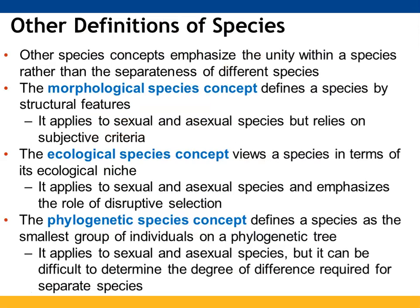There are other ways to organize or describe organisms. Morphological species concept looks at structural features and can apply to both sexual and asexual species, though the criteria are subjective. The ecological species concept looks at ecological niche, applies to both sexual and asexual species, and focuses more on the role of disruptive selection and natural selection. The phylogenetic species concept defines species as the smallest group of individuals found on a phylogenetic tree — it applies to both sexual and asexual reproducers, but makes it harder to determine how different species have to be to be classified separately.